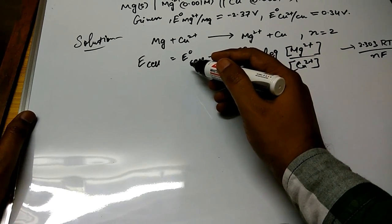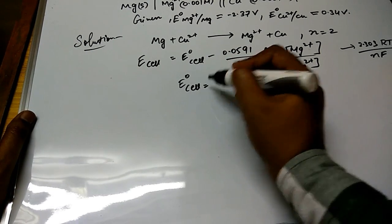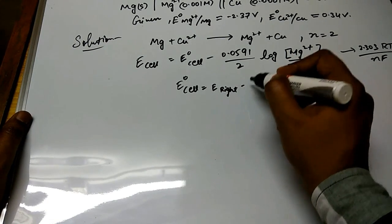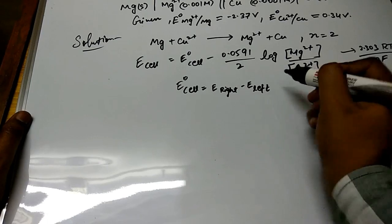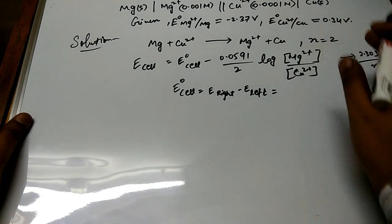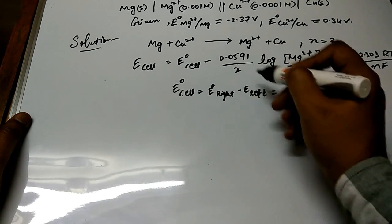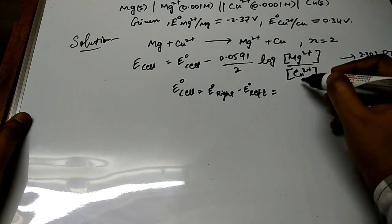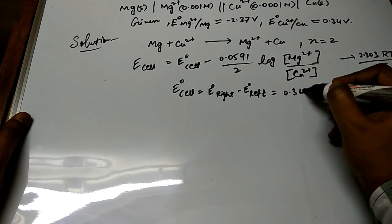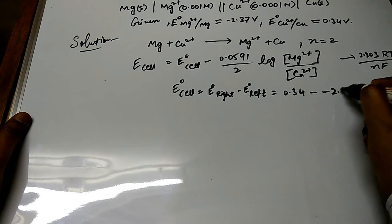Now over here you already know that E°_cell can be solved by this formula: E°_cell = E°_right - E°_left. So this will be E°_right - E°_left. That means you have to just subtract the values of these voltages.